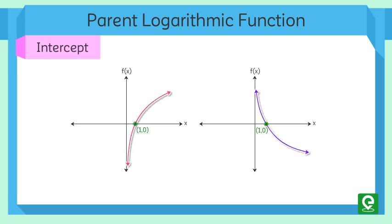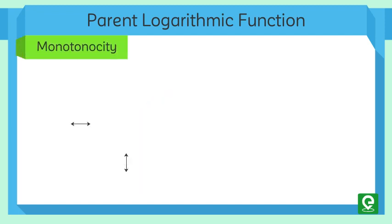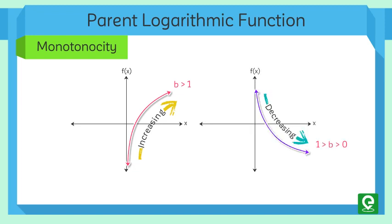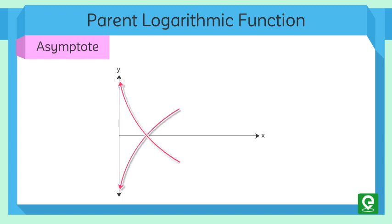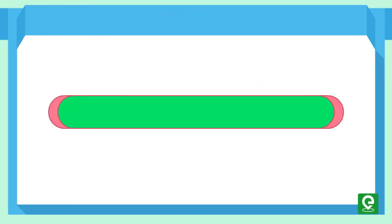The graph has X-intercept 1 and no Y-intercept, with a key point at (b, 1). Moreover, the graph is increasing when b > 1 and decreasing if b < 1, with both graphs having an asymptote at X = 0, meaning both graphs converge towards infinity at X = 0.